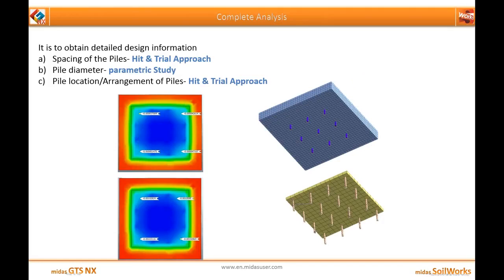In the complete analysis with numerical method, first is the spacing of the piles — based on design criteria, say displacement should not exceed a particular value, it is a hit-and-trial approach considering two types of spacing. Second is the pile diameter, using parametric study to change pile diameter and get results for the same model. Third is the pile location or arrangement, also hit-and-trial: consider different foundations with different raft depths and pile arrangements to check whether design criteria are satisfied.